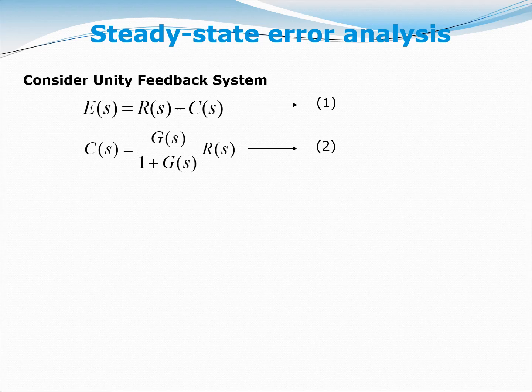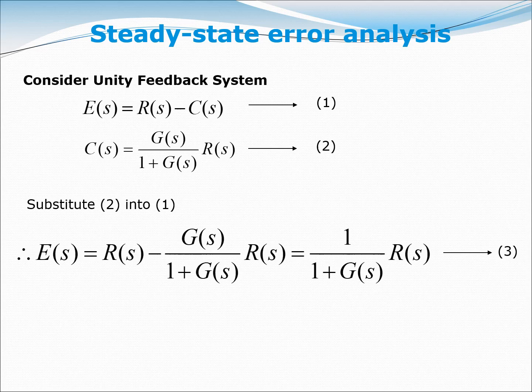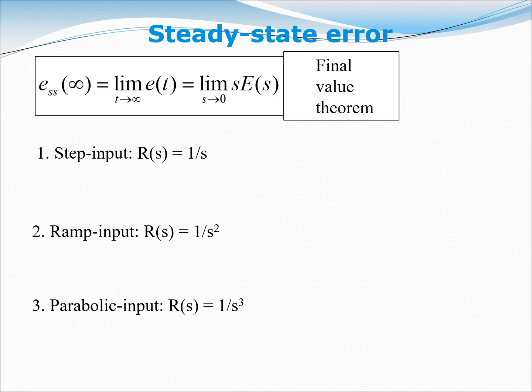Focusing on the unity feedback system, the system error E(s) equals R(s) minus C(s) — this is equation one. From the block diagram, the closed-loop transfer function C(s)/R(s) equals G(s) over one plus G(s), which is equation two. Substituting equation two into equation one gives us equation three for E(s).